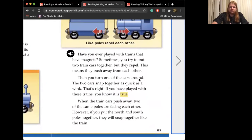Have you ever played with trains that have magnets? Sometimes you try to put two train cars together, but they repel. This means they push away from each other. Then you turn one of the cars around. The two cars snap together as quick as a wink. That's right. If you have played with these trains, you know it's true.